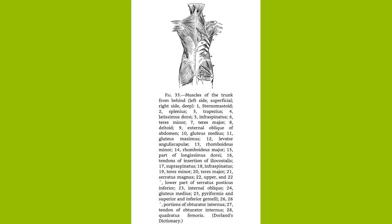Muscles of the Back. The chief back muscles are the trapezius and the latissimus dorsi, which together cover in the back pretty thoroughly. The trapezius arises from the occipital bone, the ligamentum nuchae, and the spinous processes of the seventh cervical and all the dorsal vertebrae, and is inserted into the outer third of the clavicle or collarbone and the acromion process and spine of the scapula or shoulder blade.